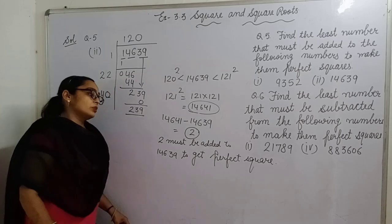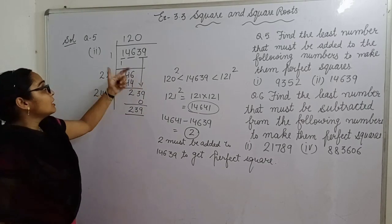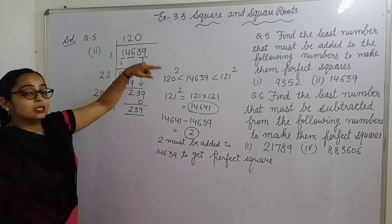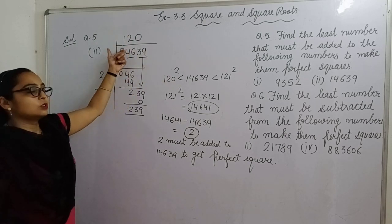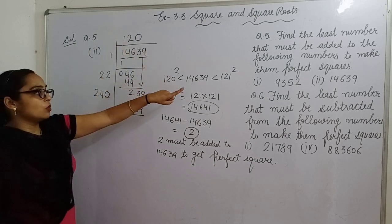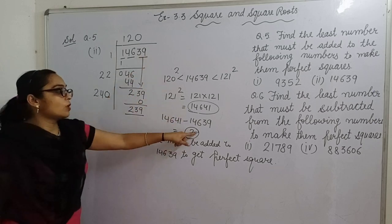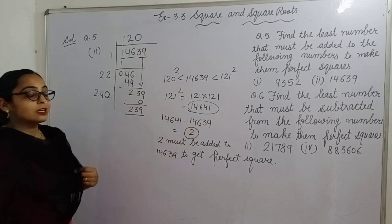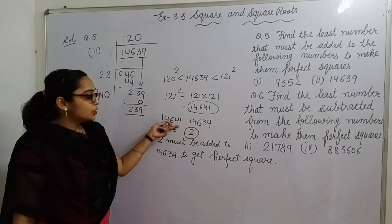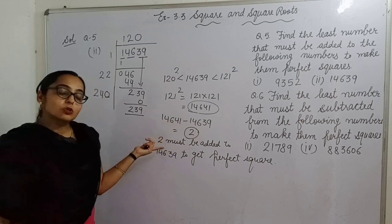So students, remember: when you have addition, take the given number and find its square root using long division. The square root you get will not be exact. Take the next number, find its square, subtract the original number, and that difference is what you must add. If we add 2 here, this becomes a perfect square number.